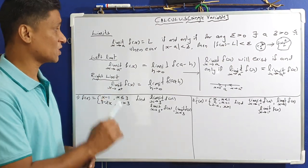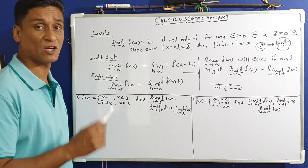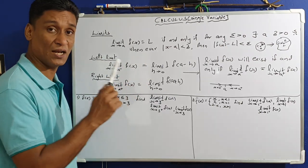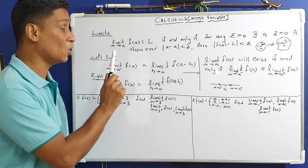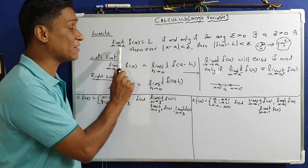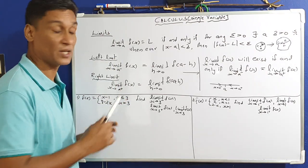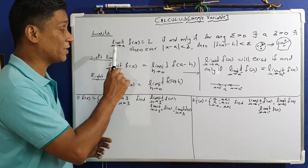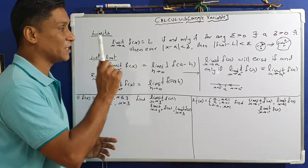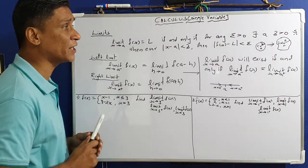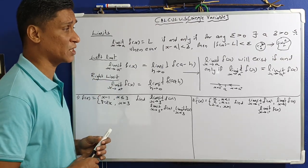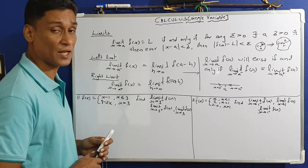In this UG paper, we will start from the basic definition of limit. The formal definition: limit x tends to a of f of x equals L, if and only if for any epsilon greater than 0, there exists a delta greater than 0 such that whenever the mode of x minus a is less than delta, then the mode of f of x minus L is less than epsilon.